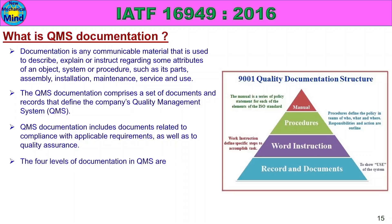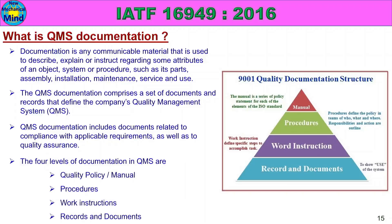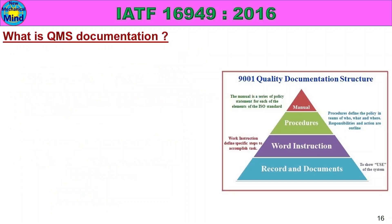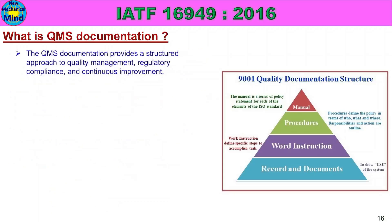The four levels of documentation in QMS are: first, quality policy or manual; second, procedures; third, work instructions; fourth, records and documents. The QMS documentation provides a structured approach to quality management, regulatory compliance and continuous improvement. QMS documentation can be paper-based or electronic, that is, system-based.